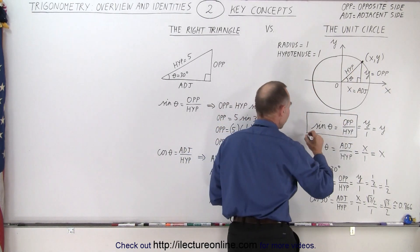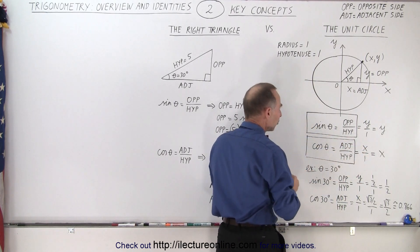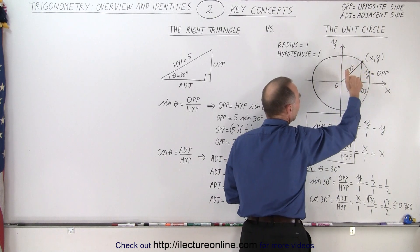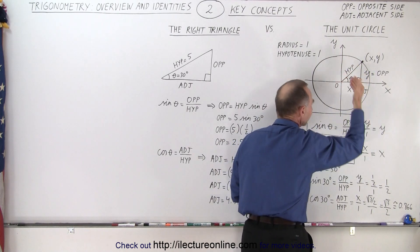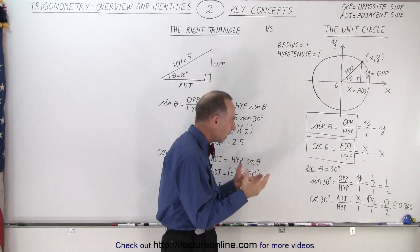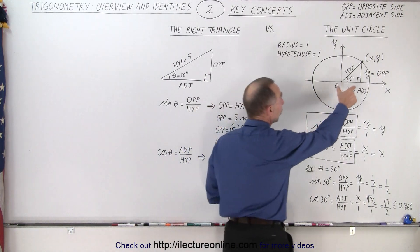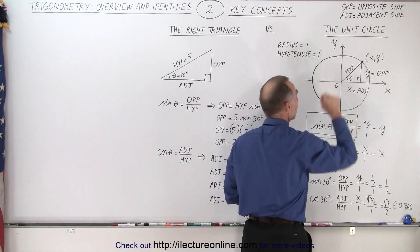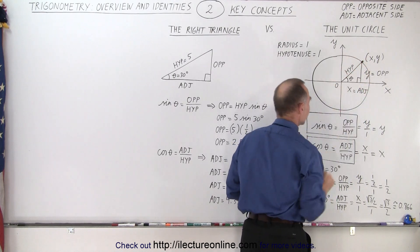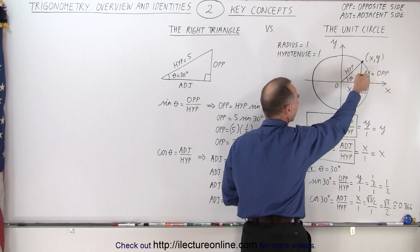The cosine of theta is defined as the adjacent side divided by the hypotenuse. So if we take the length of the adjacent side and divide it by the hypotenuse, we get the value of the cosine of the angle theta. The sine and cosine simply represent a relationship between one of the two sides of the triangle and the hypotenuse — for sine, it's opposite over hypotenuse; for cosine, it's adjacent over hypotenuse.